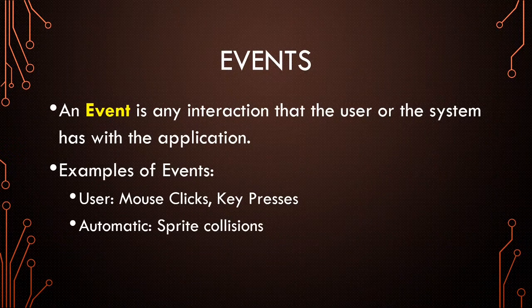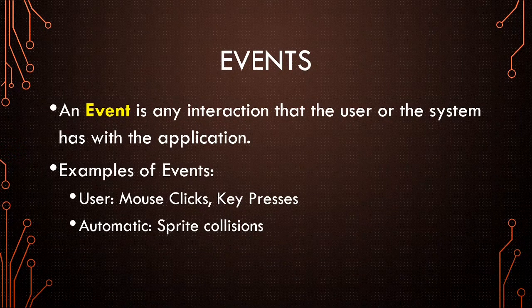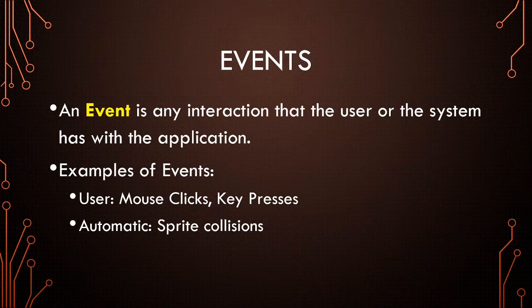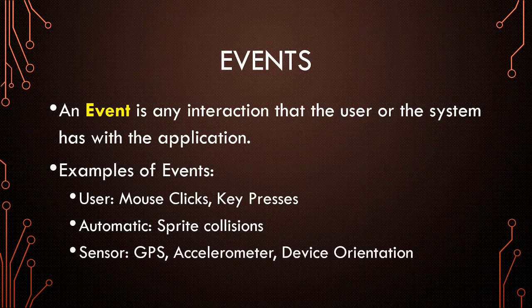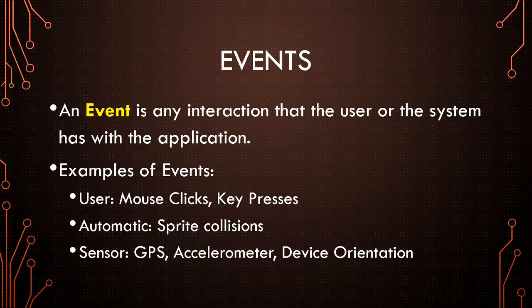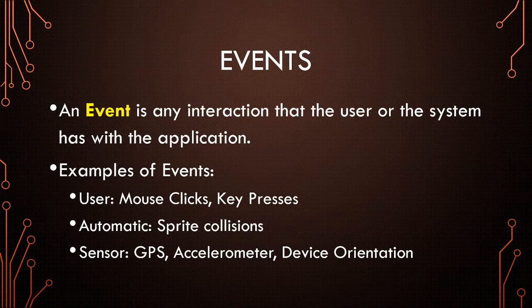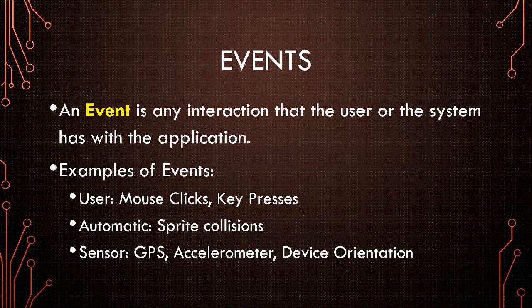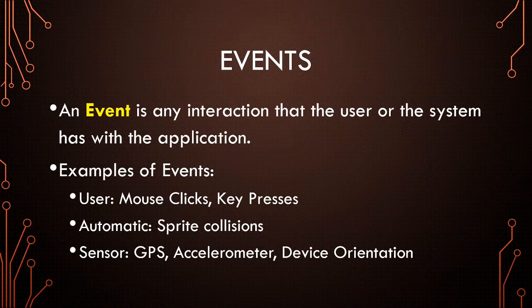Then we have automatic events. Sprite collisions, if you have a game where we have a ball that bounces around, if it reaches the edge of the screen or it collides with a paddle or another object, those are called sprite collisions and that's a different type of event. The next type is a sensor event. The device running the app has different sensors on it, a GPS, an accelerometer, and we can check those sensors for certain things like whether or not the device is in portrait or landscape orientation.